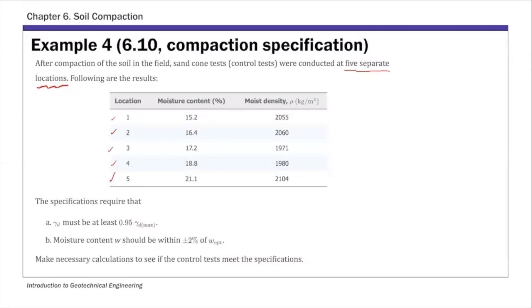And so we're basically asked to, and we're given specifications. So first, your gamma d field must be at least 95% of gamma d max. So this is the first specification. And also the moisture content should be within plus minus 2% of the optimum moisture content. So we have these two requirements. And I'm going to determine if these five locations meet these two requirements.